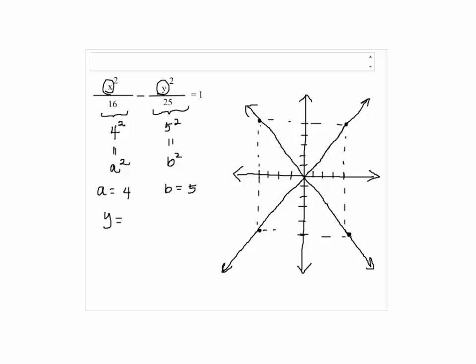So our asymptotes is given by y equals plus minus b over a, so the answer will be plus minus 5 over 4, and that's these two lines.